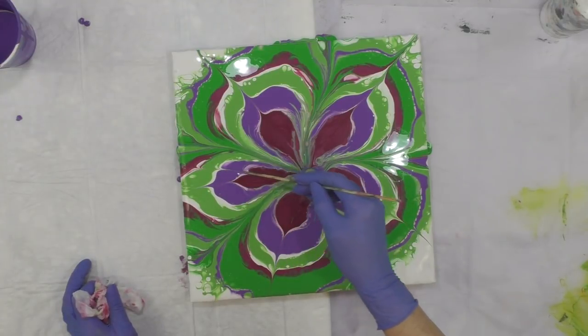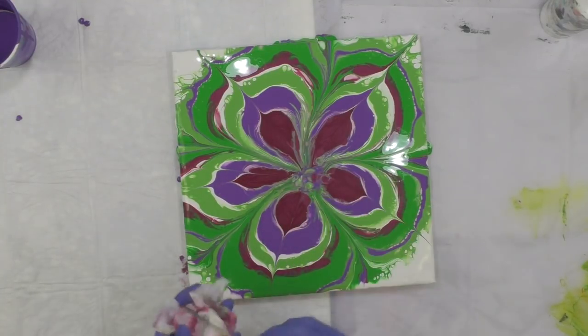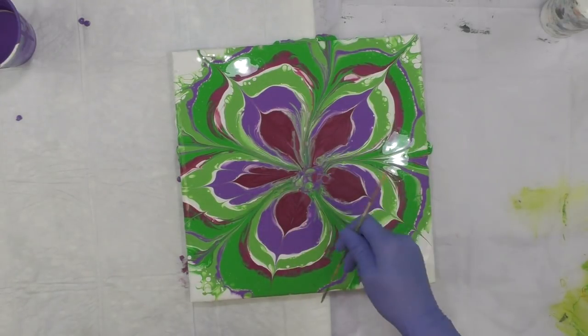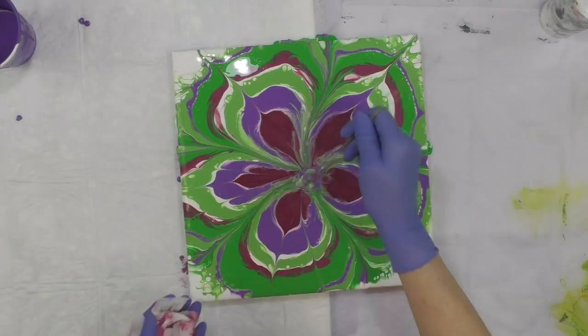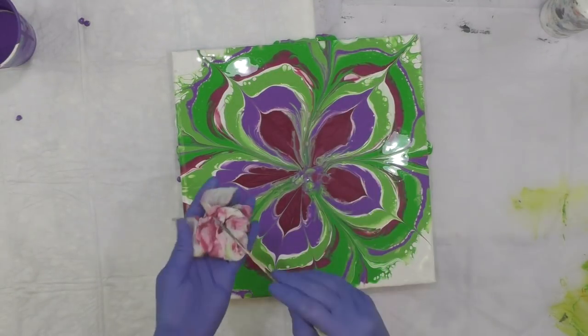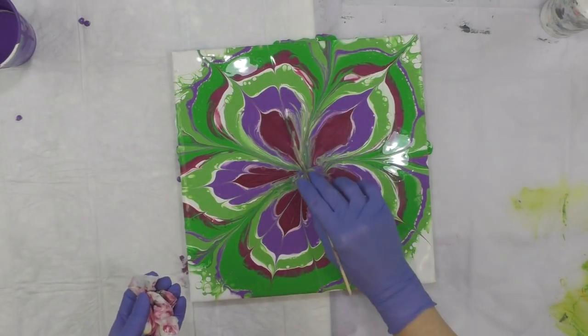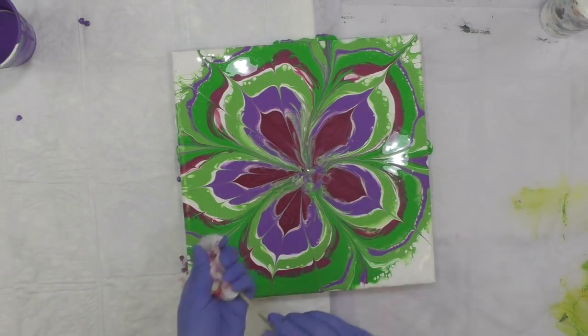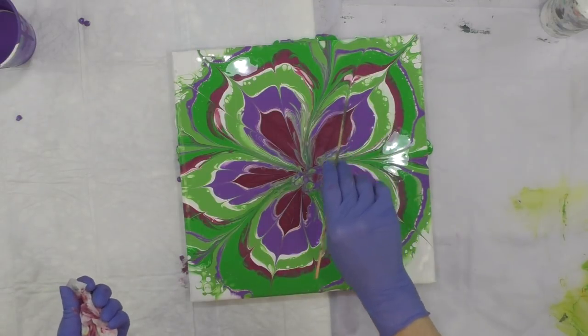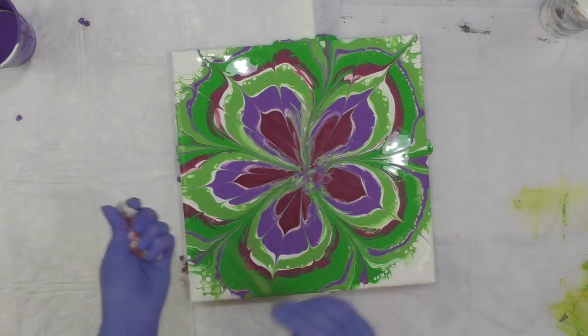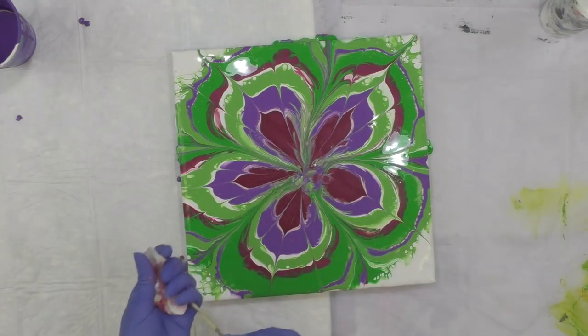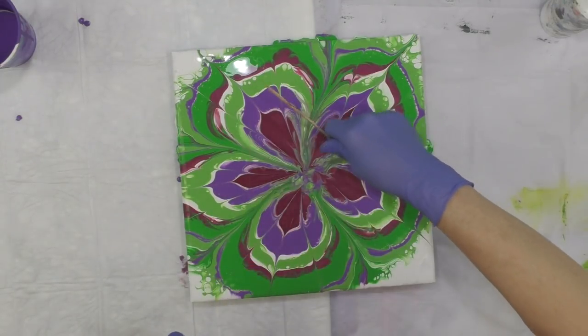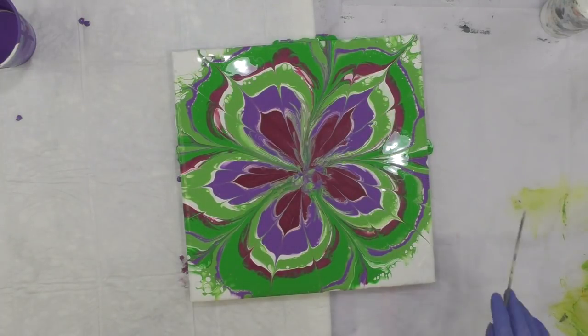I can do it once, I can do it in between each one, I can come inwards on the other side. Let's see how that looks right here. That's kind of pretty. So I'll do two on either side of the center part, wiping each time.